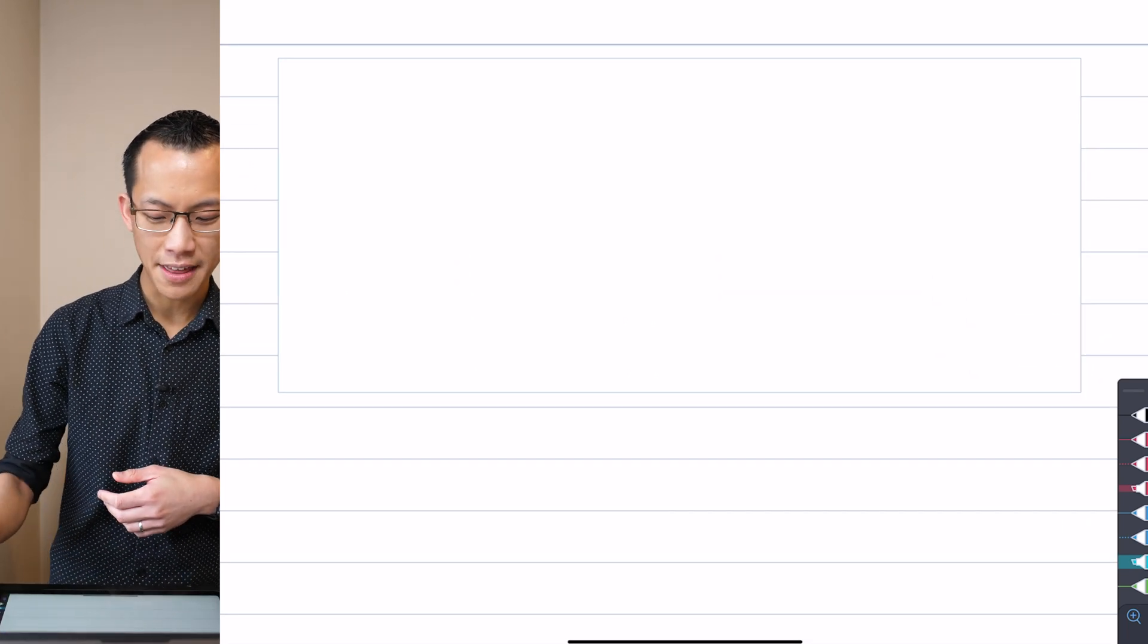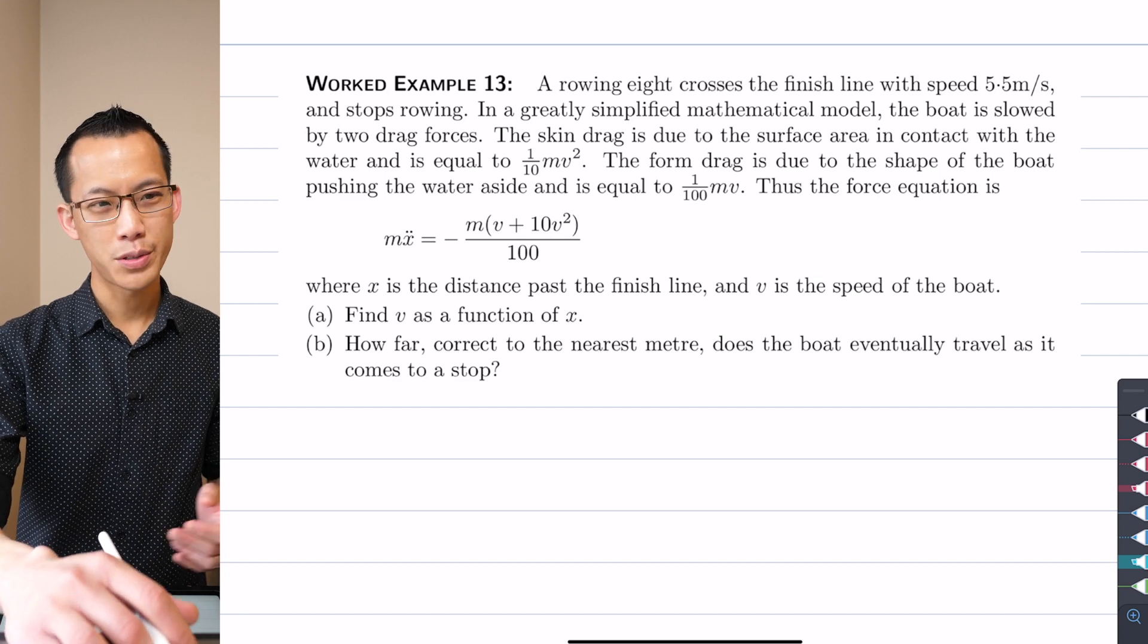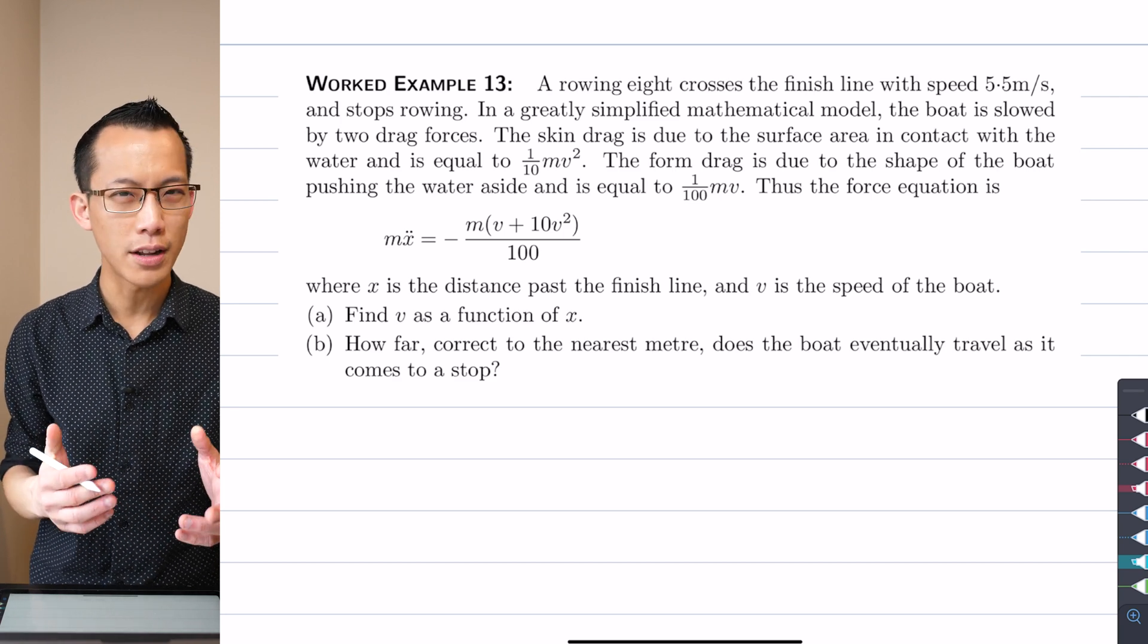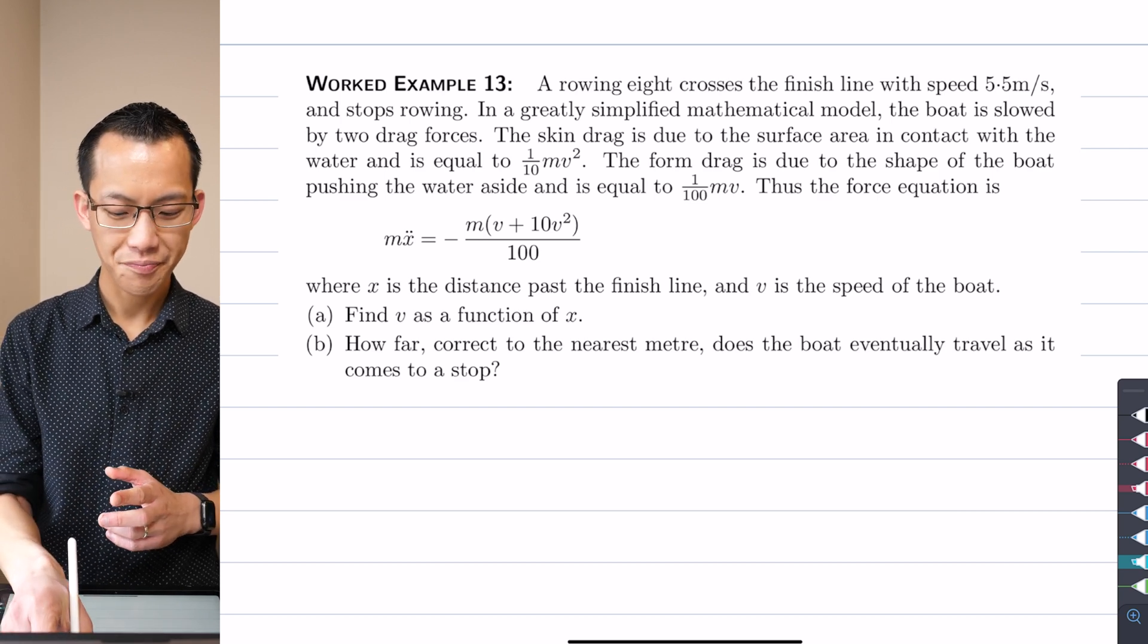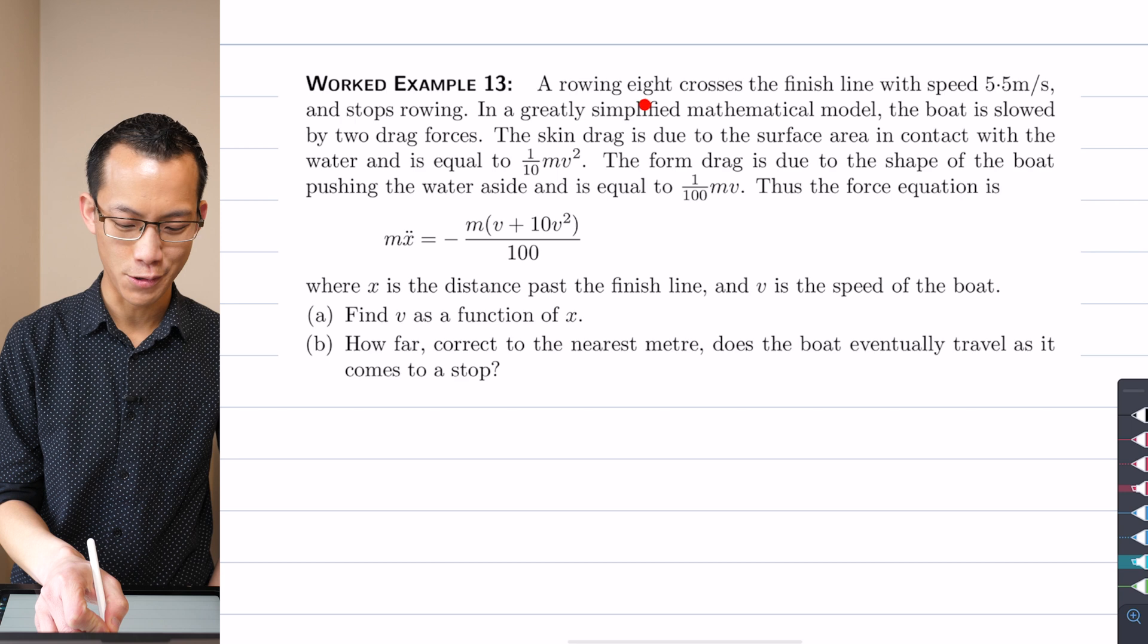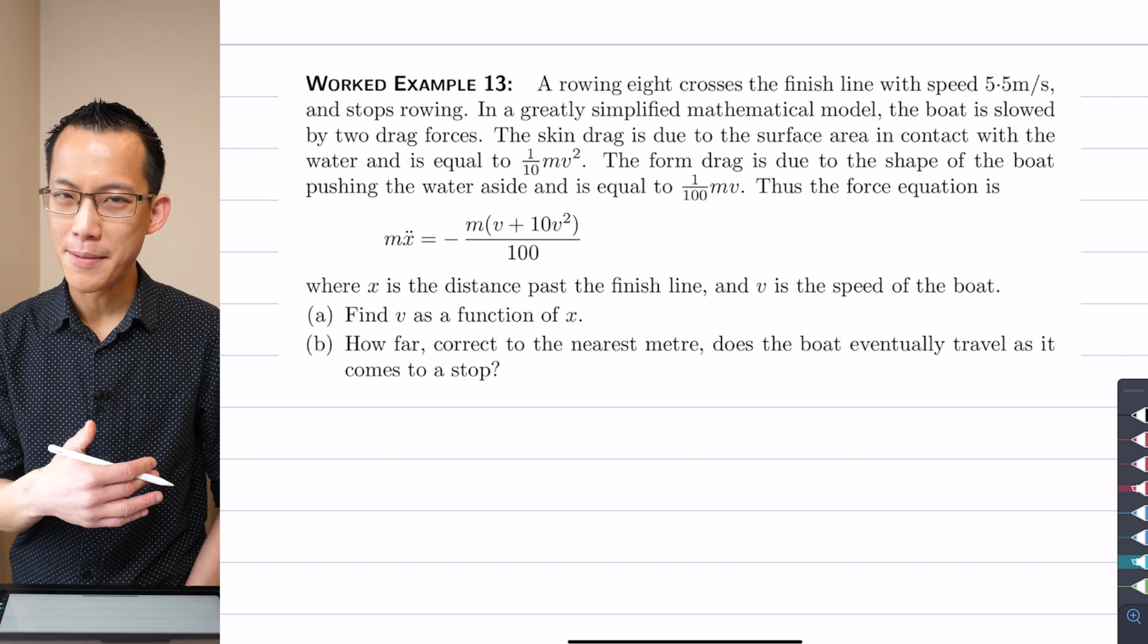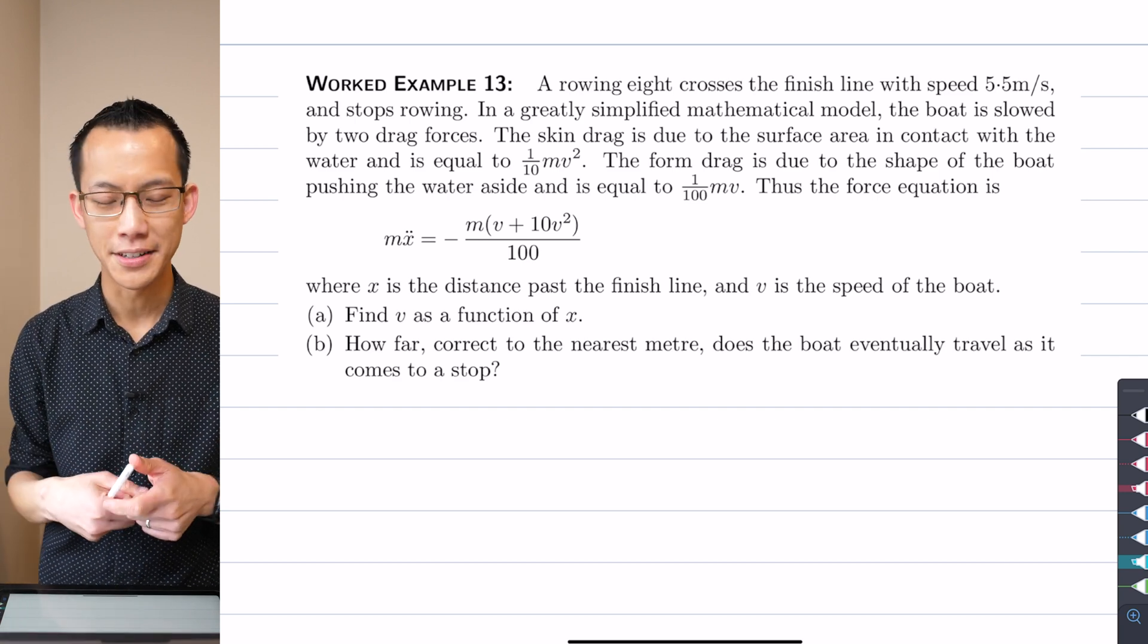So what we're going to do in our time together is have a look at this example. We're going to try and highlight all of the bits of it that are important, and then there are also a few questions in the exercise over in Canvas for you. You can have a look at this question. You don't need to write down all of it. There's a lot of detail, but we will highlight the important bits that you should write down. Well, let's start at the top. It says a rowing eight, so you know, eight guys, eight girls in a canoe, or a kayak. They cross a finish line in a race with speed five and a half meters per second, and then they stop rowing.